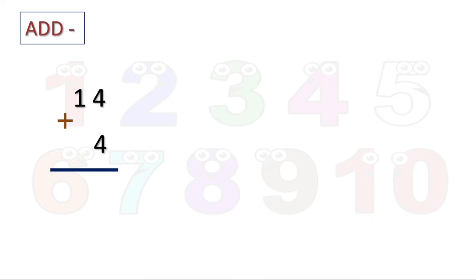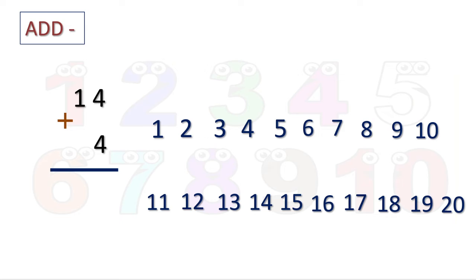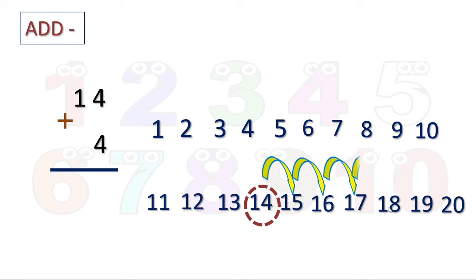Now: 14 plus 4. Let us write 1 to 10 and 11 to 20. We encircle 14 first. How many steps do we go in the forward direction? 4 steps: 1, 2, 3, and 4. We reached 18. So 18 is our answer.